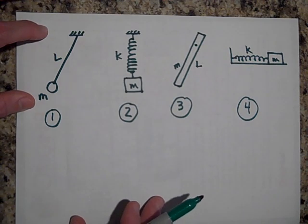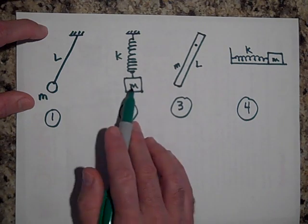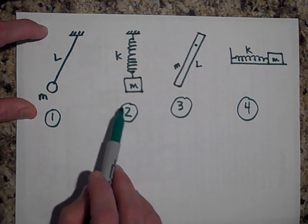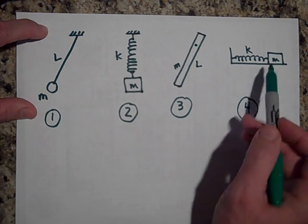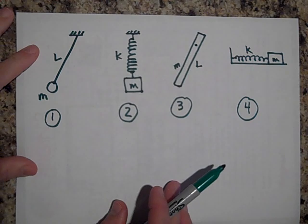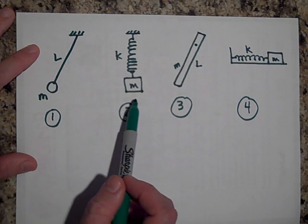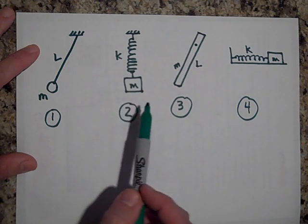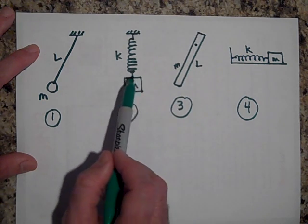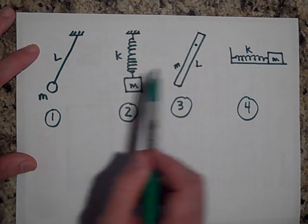Question one: of systems two and four, which has the greater period if they have the same mass and the same K? The answer is that they'll have the same period. If you look it up, you'll see that I show the reason why these two have the same period — both are given by T = 2π√(M/K).